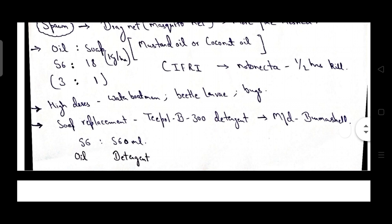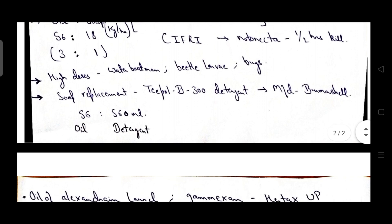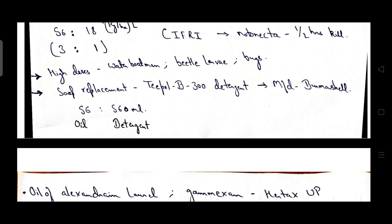High doses can even kill water boatman, beetle larvae, as well as bugs. Preparation is T-pol B 300. It is a detergent manufactured by Burma Shell. Ratio is 56 to 560 ml of detergent that is T-pol B 300.